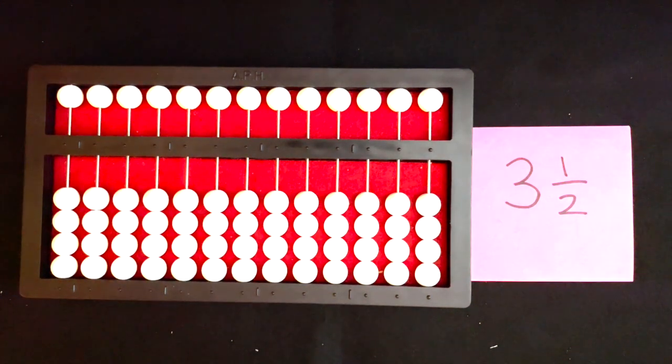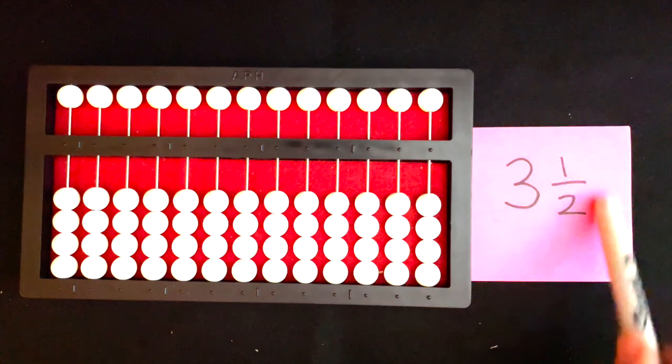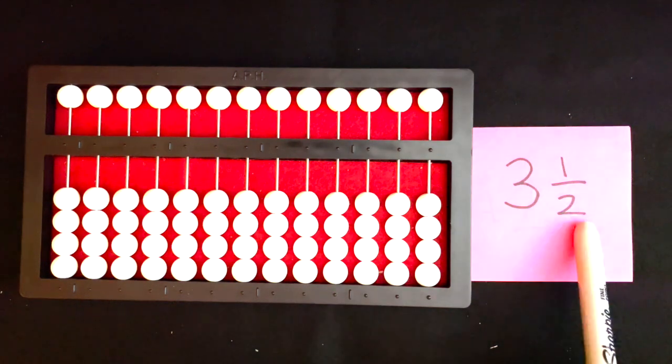I'm going to show you how to set and then add with a mixed number. A mixed number is a fraction that has a whole number and the fraction part. This one is three and a half.